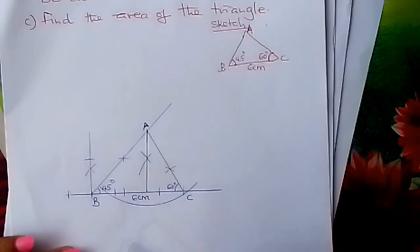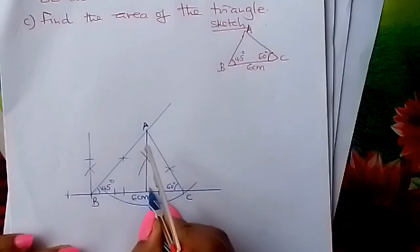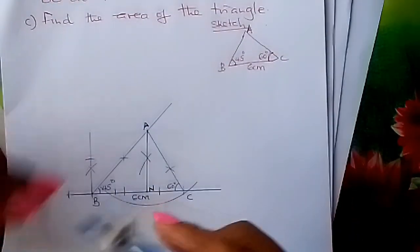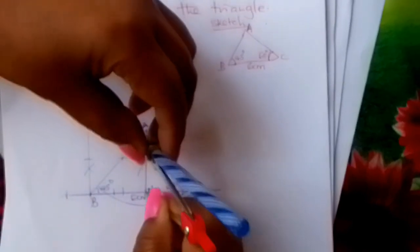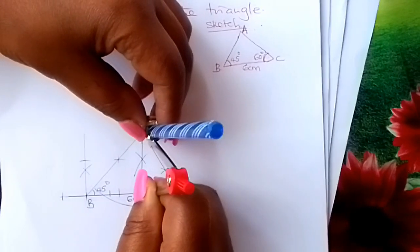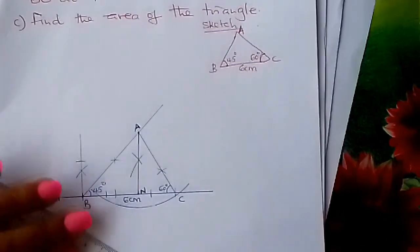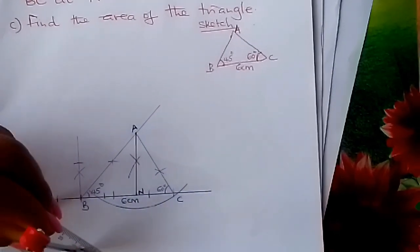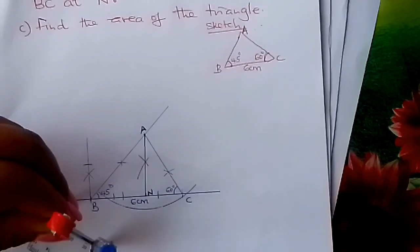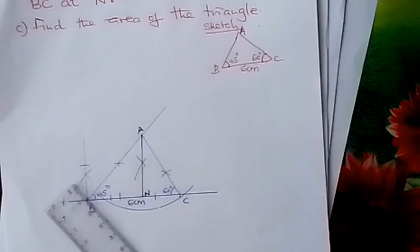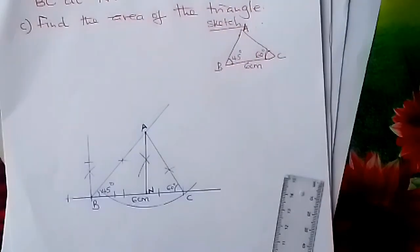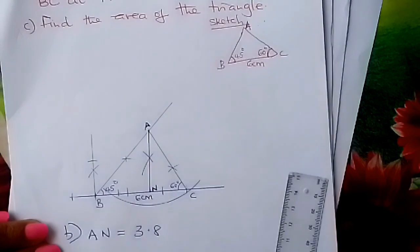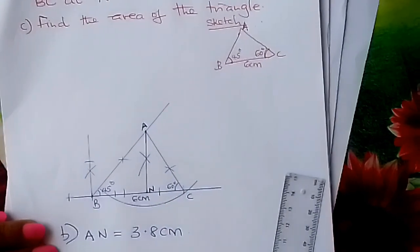So this is our perpendicular, and it meets BC at N. Now we are told to measure AN. Pick the length AN with your compasses and place it on your ruler to read the measurement. It is about 3.8 centimeters. So AN equals 3.8 centimeters.